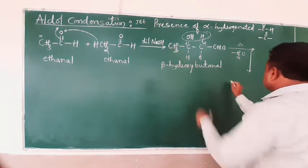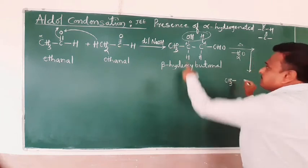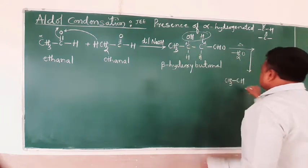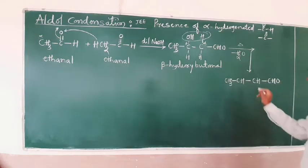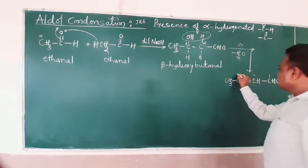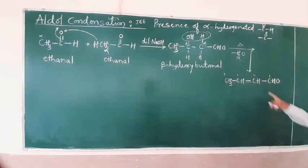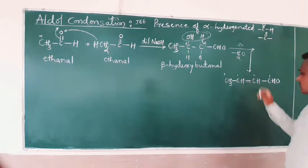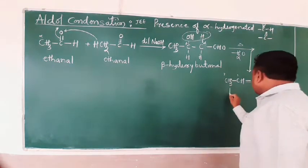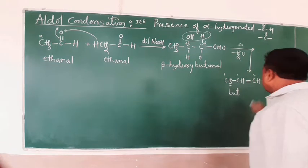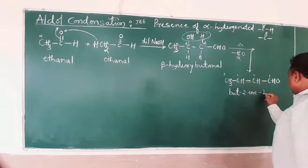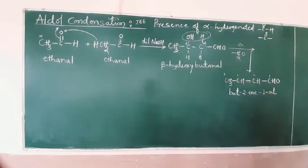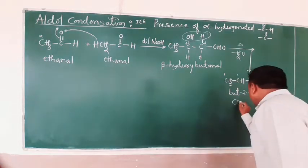This is the final product: CH3, then CH, then CH, then CH2 — with a double bond at position 2. Counting carbons: 1, 2, 3, 4 — with a double bond at the second position, so it is but-2-ene-1-al. Commonly we call this crotonaldehyde.